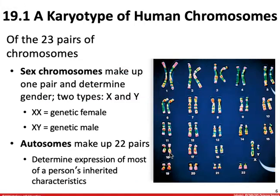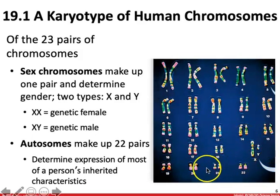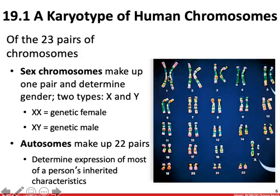Of the 23 pairs of chromosomes, we do have one pair of so-called sex chromosomes. Sex chromosomes make up one pair and they are ultimately going to be responsible for determining gender. Two X chromosomes indicate a female, and an X and a Y indicate a male. Autosomes are going to make up the remaining 22 chromosomes, and they are going to be responsible for determining the expression of a person's inherited characteristics.